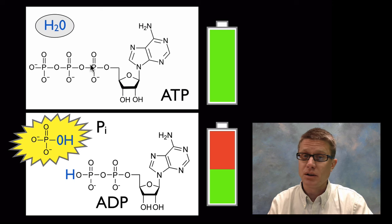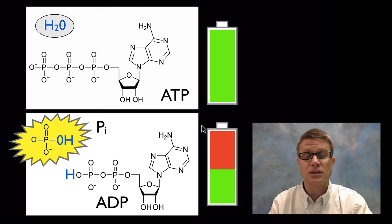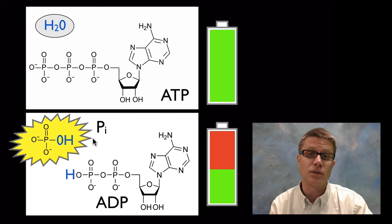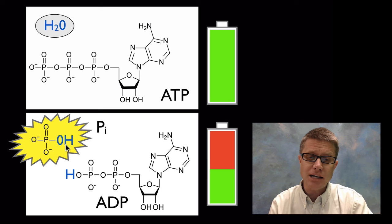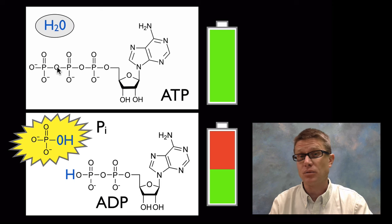If ATP just sat in water, it would all eventually hydrolyze into ADP and loose phosphates — like a battery that's lost its charge. In life, we tap energy through respiration by breaking down glucose, or through photosynthesis by taking in energy from the sun, and we attach that phosphate group again in a dehydration reaction. Attaching the phosphate makes ATP; breaking it releases energy.